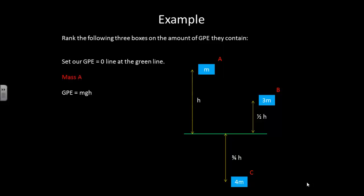So if we look at mass a, our gravitational potential energy will just be mgh. Mass b, our gravitational potential energy is 3m times g times one half h, or 1.5 mgh. And then for mass c, it's 4mg times negative three quarters h, which is going to give us negative 3mgh.